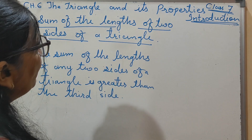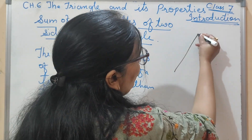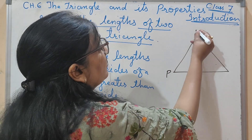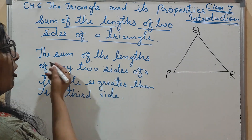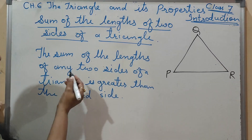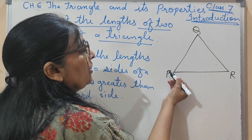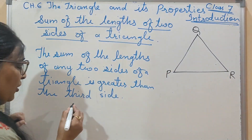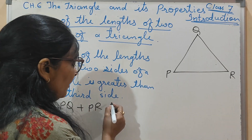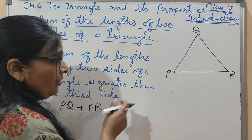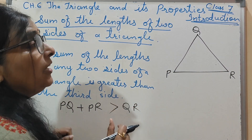Now the next property is: the sum of the lengths of two sides of a triangle. Suppose this triangle is PQR. The sum of the lengths of any two sides of a triangle is greater than the third side. Taking sides PQ and PR: length of PQ plus PR is greater than the length of QR.